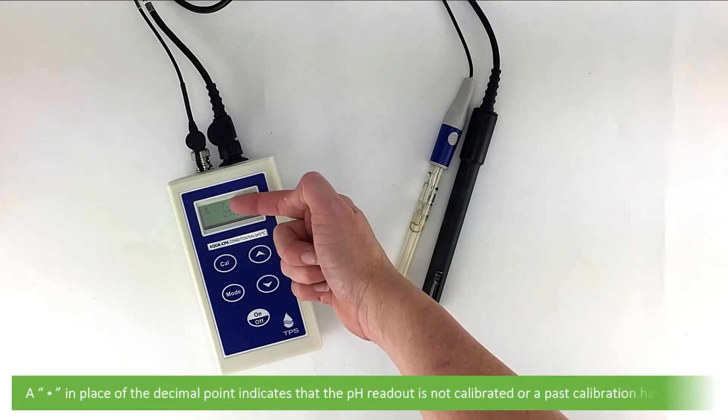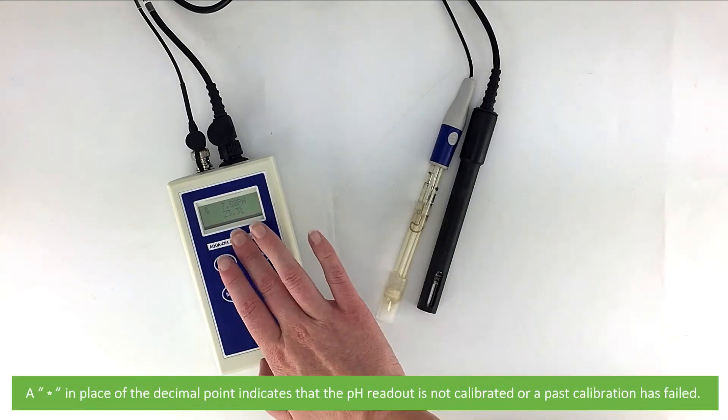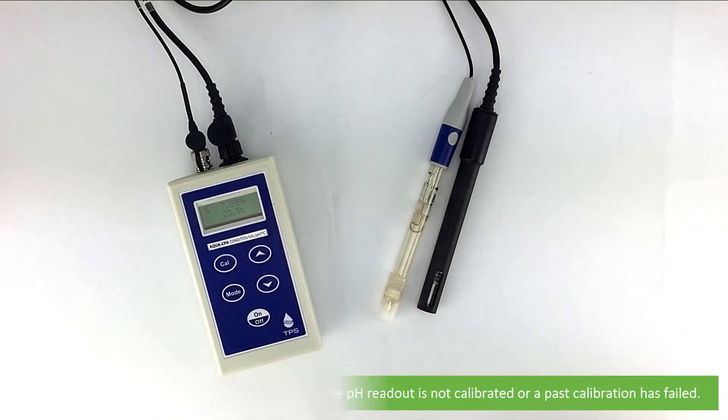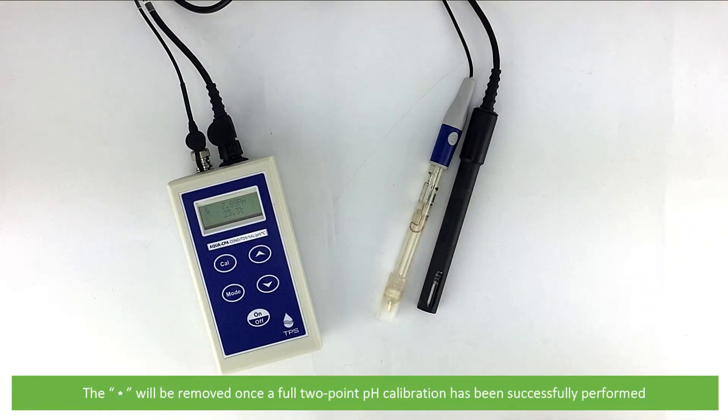An asterisk in place of the decimal point indicates that the pH readout is not calibrated or that a past calibration has failed. The asterisk will be removed once a full two-point calibration has been successfully performed.